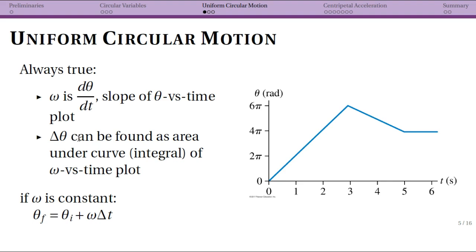Changes in angle can be found as the area under the curve of an ω versus t plot, just like a change in position x can be found as the integral of a velocity versus time plot. These are always true, but if ω is constant, which is the definition of uniform circular motion (UCM), then θ_f = θ_i + ωΔt, where ω could be negative depending on direction.